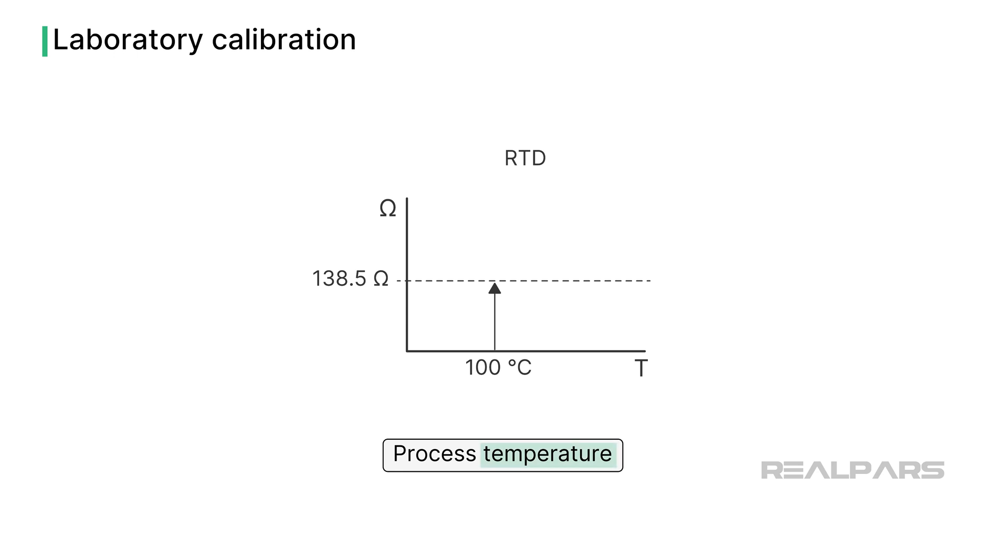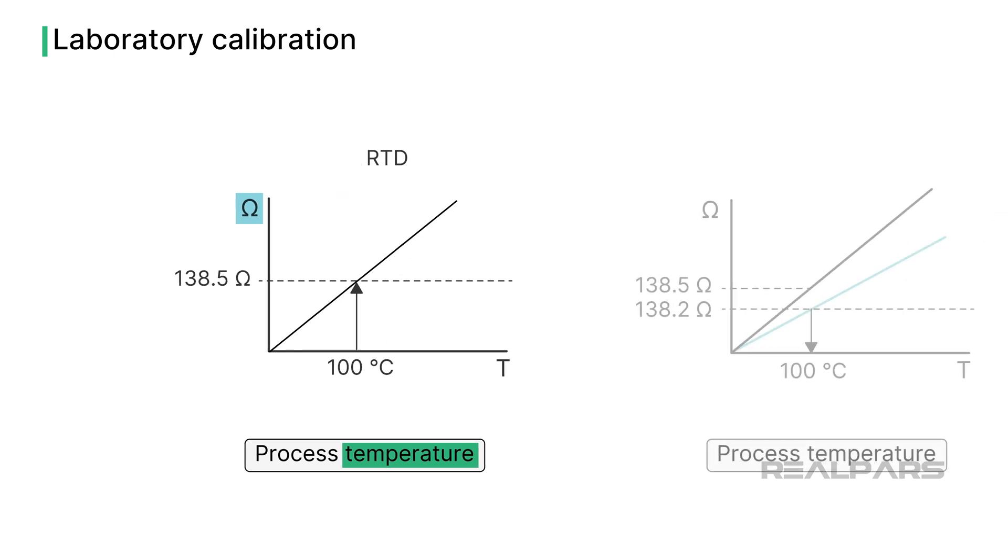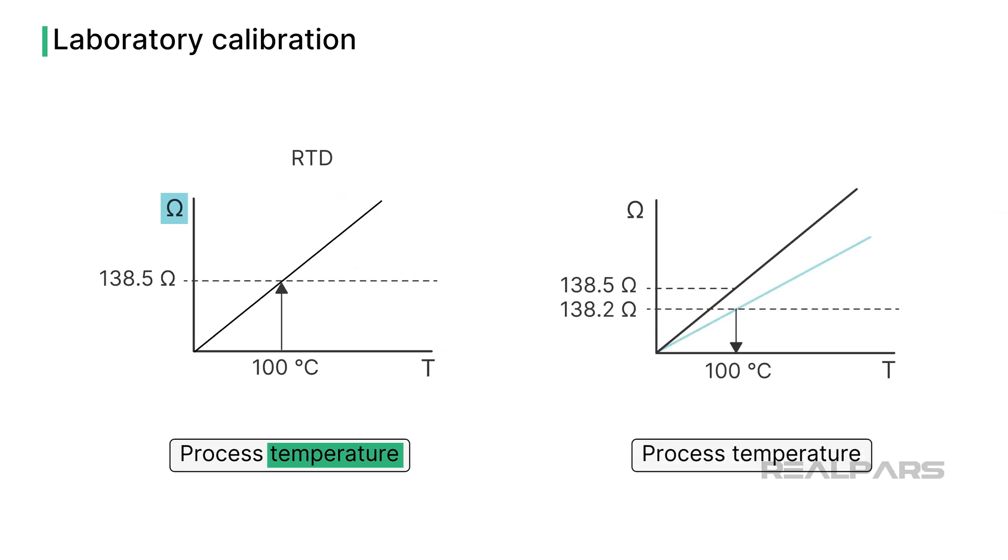RTDs have a resistance-temperature relationship following a very specific characteristic curve. But when manufactured, an RTD characteristic might deviate slightly from this curve, making it unsuitable for critical applications.